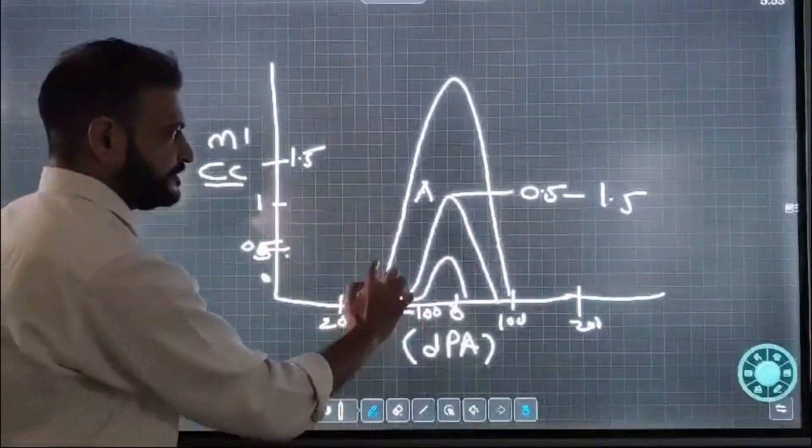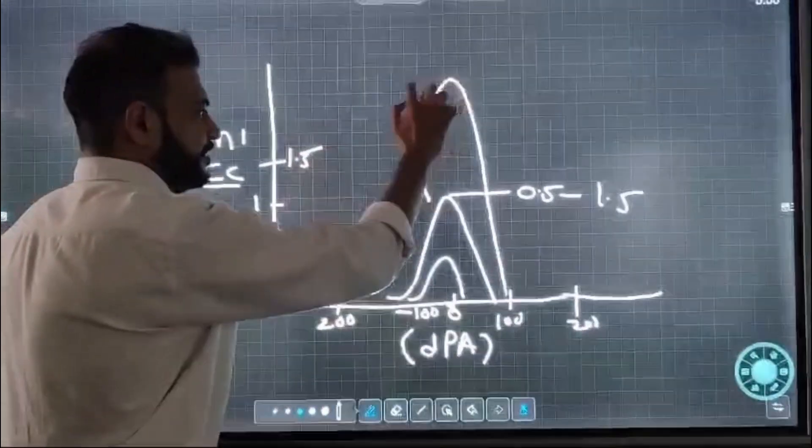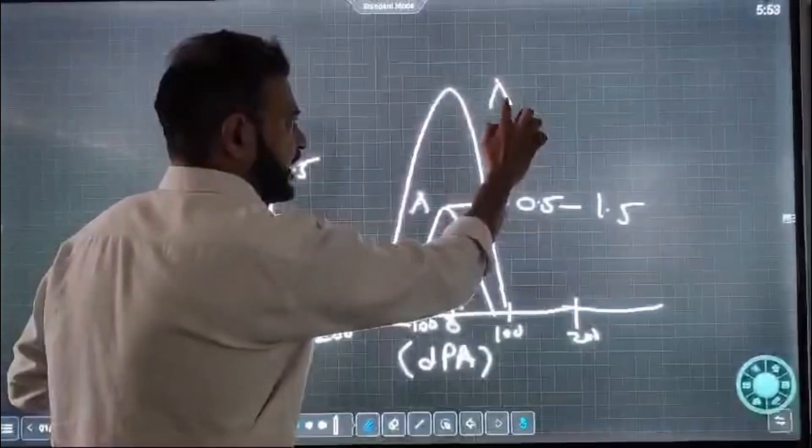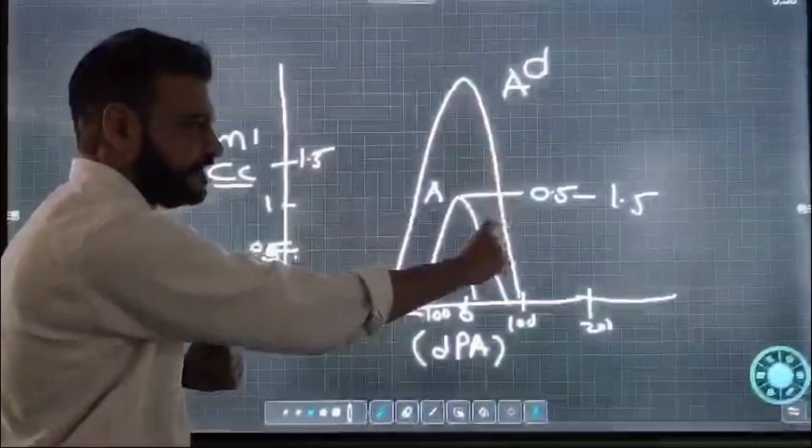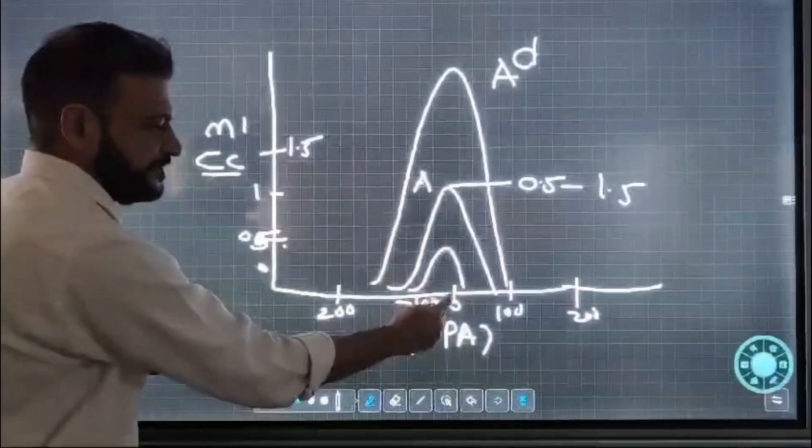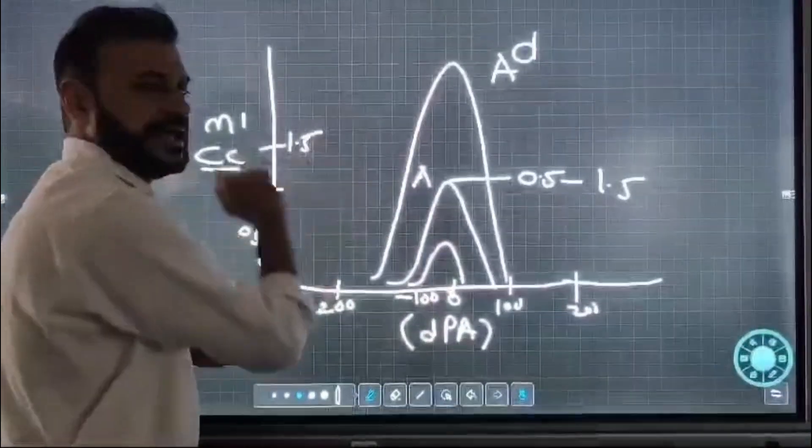If the height of the curve is more than 1.5, we call it a Type Ad curve. This means the compliance is higher. At zero pressure, high compliance is present.